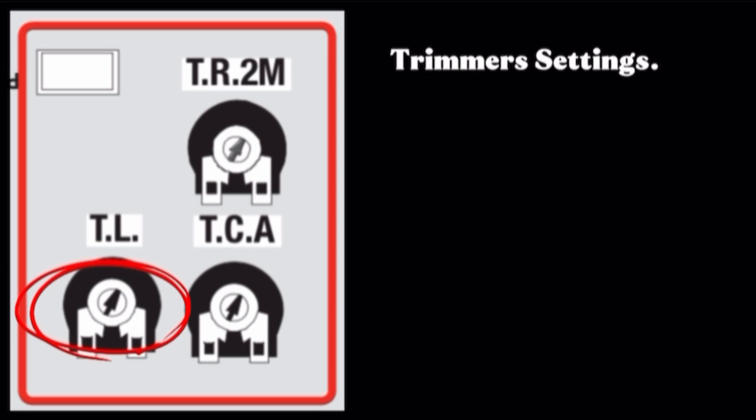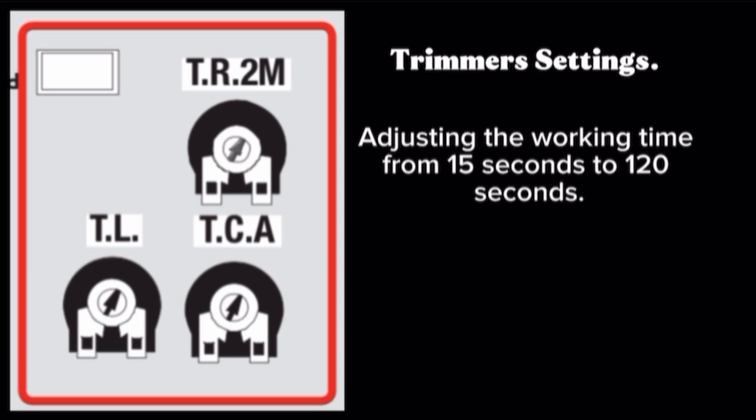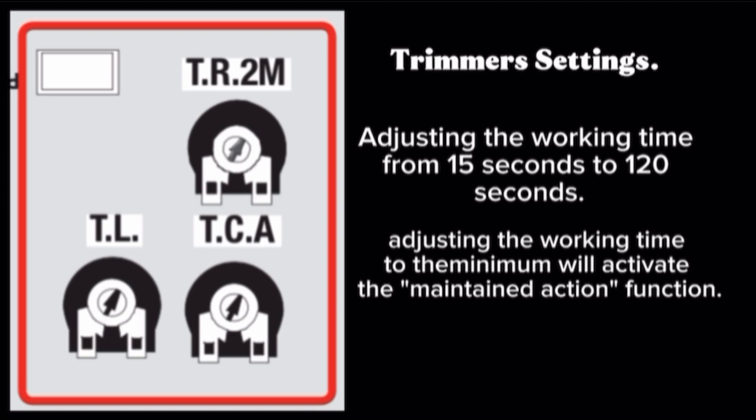Trimmer TL. Adjusting the working time from 15 seconds to 120 seconds. Adjusting the working time to the minimum will activate the maintained action function.